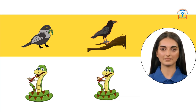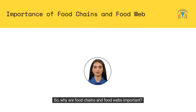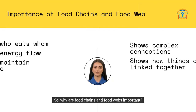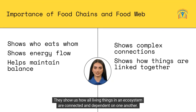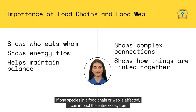So why are food chains and food webs important? They show us how all living things in an ecosystem are connected and dependent on one another. If one species in a food chain or web is affected, it can impact the entire ecosystem.